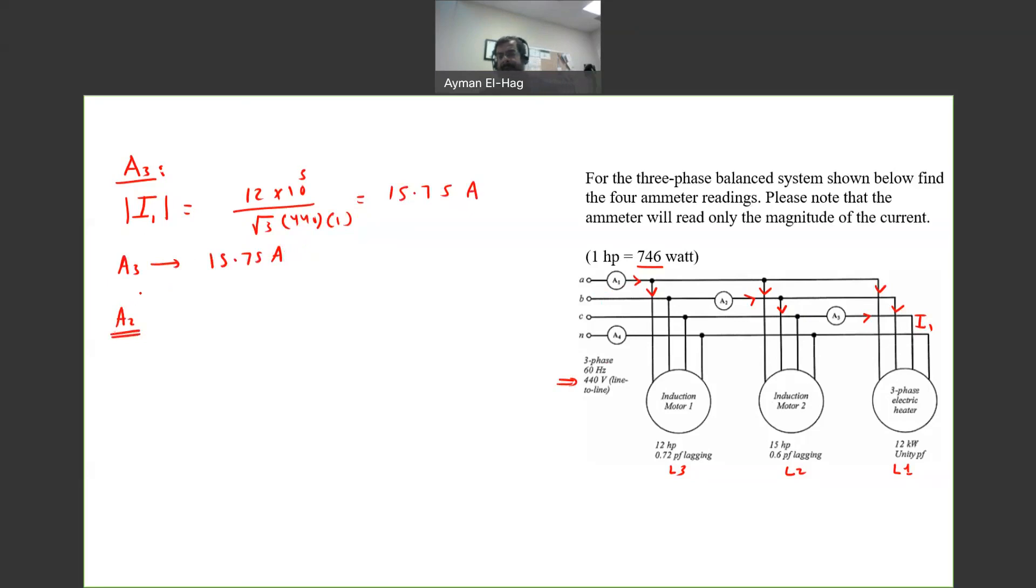The safest approach is to find total S from load one and load two, then find the magnitude of S. S is equal to root 3 V times I. That is the safest approach regardless of the connection. You don't need to worry if this is Y or delta, so we'll keep using this approach.